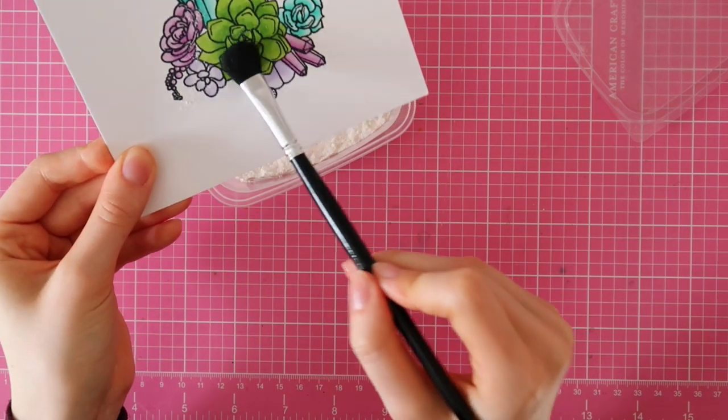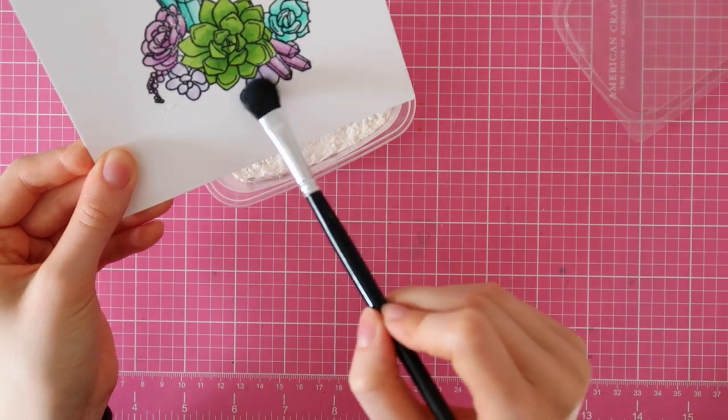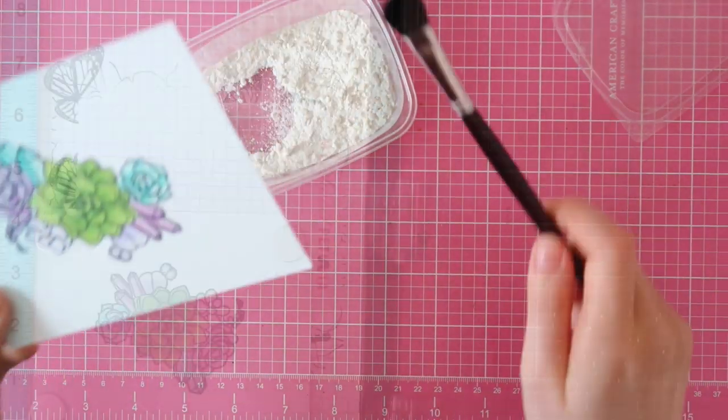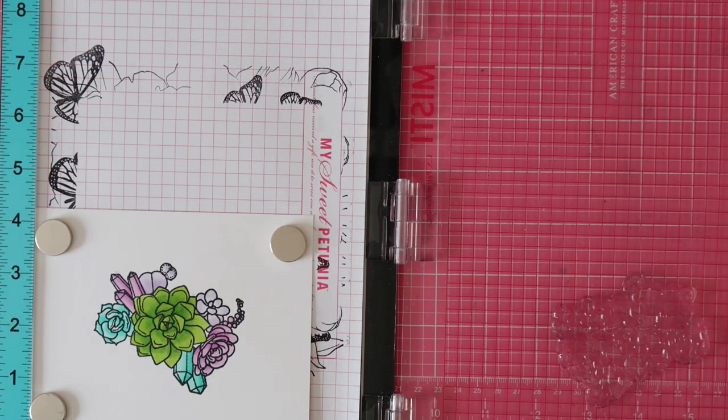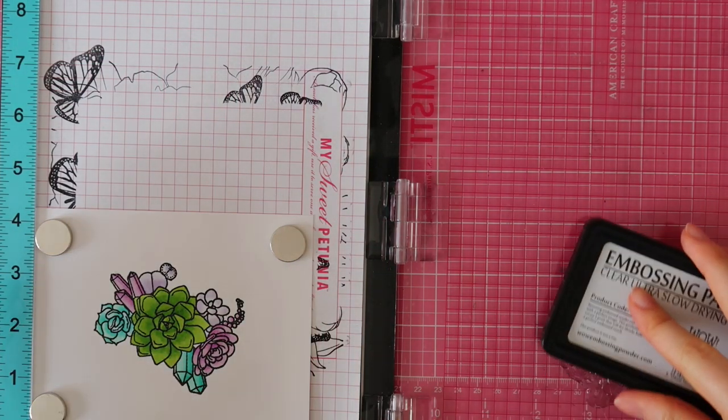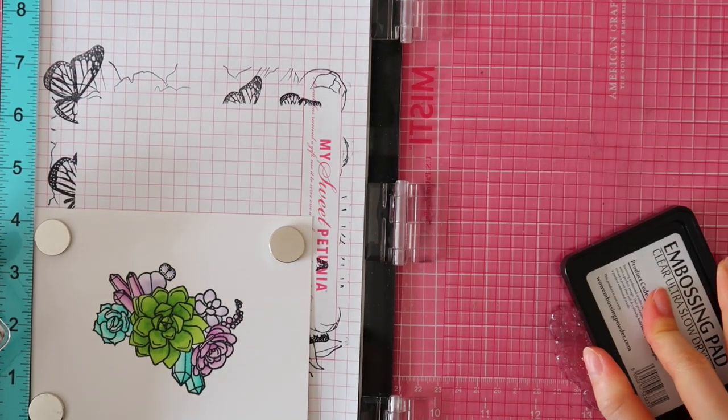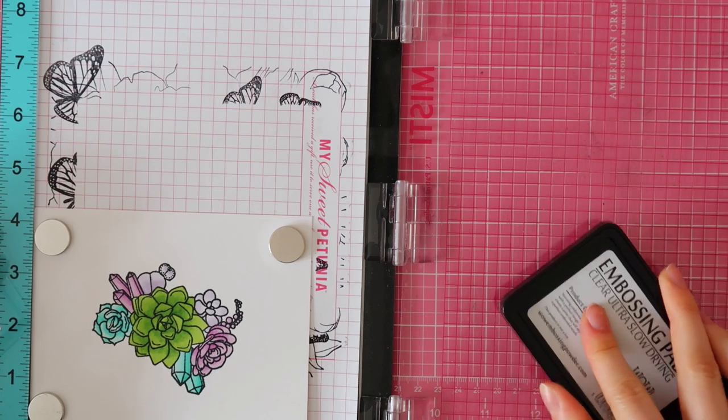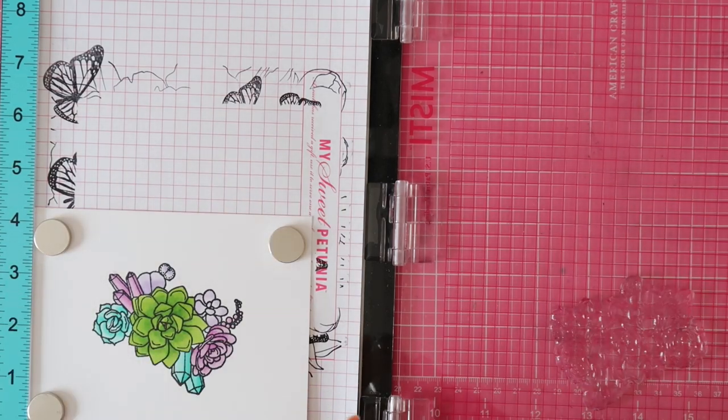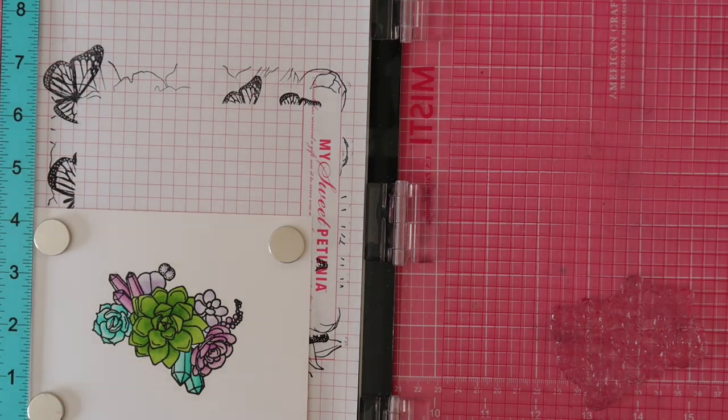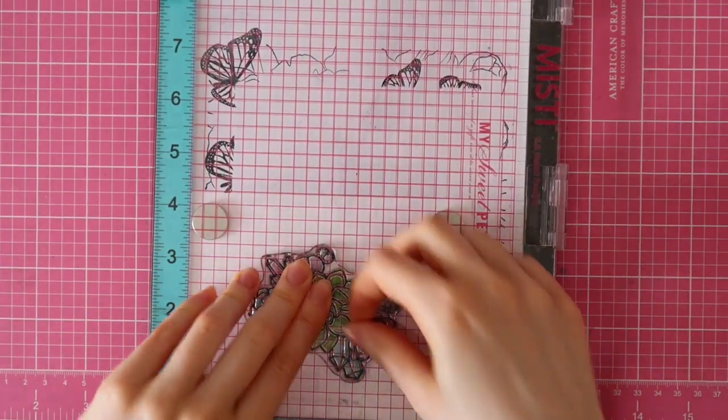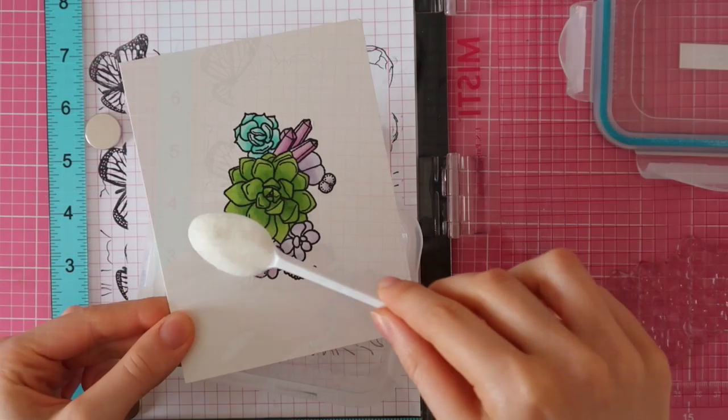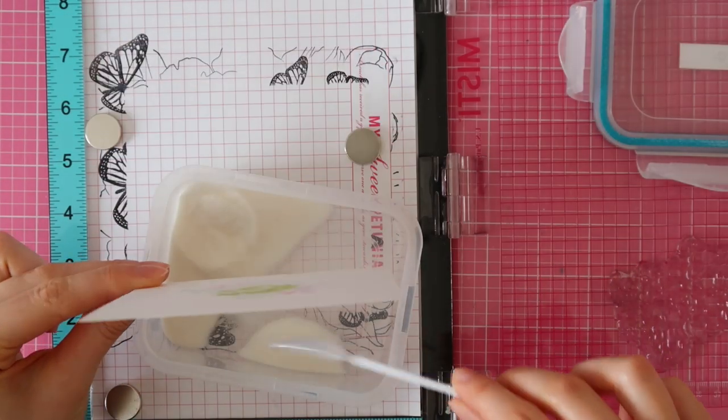After stamping this succulent piece, I didn't remove the stamp from my MISTI tool. It's still in the same place because I actually wanted to add some gloss to this image. First, I prepped my image with some kitchen flour just to make sure that the embossing powder won't stick to the wet alcohol ink. And now I just inked up my succulents arrangement with the WOW Ultra Sticky and Slow Drying ink pad.